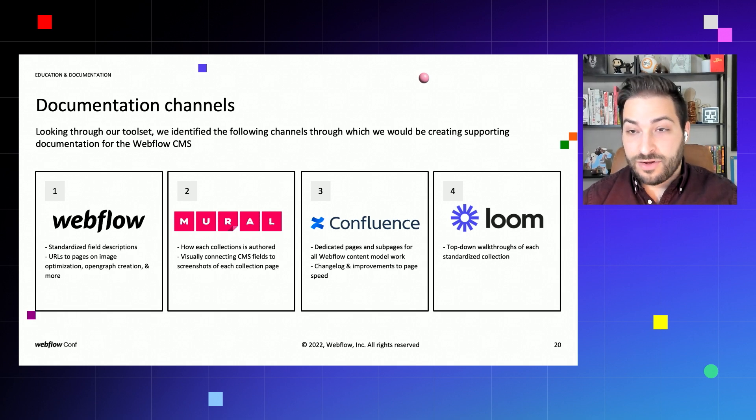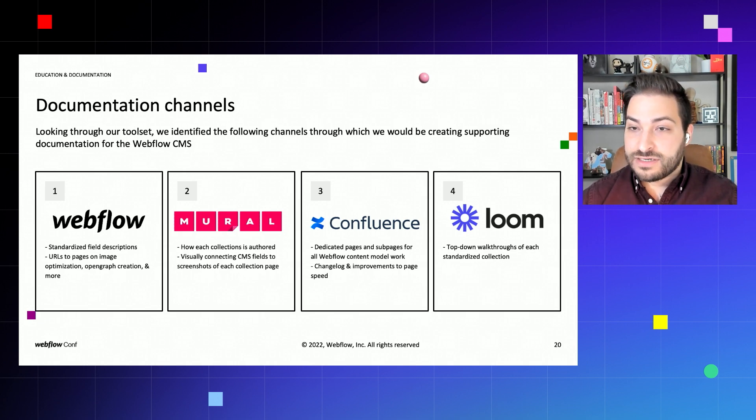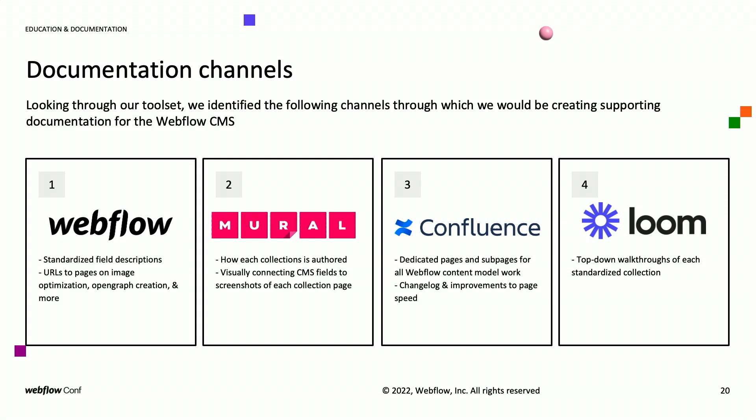Other documentation channels we used were Confluence. We created dedicated guides for image optimization, open graph image collection creation, and writing of all text. We also created individual reports for each CMS collection, detailing what was done to that collection as part of the content model work, links to other documentation about the collection like how to create an item, and before-and-after speed tests showcasing how much the pages improved. Lastly, we leveraged Loom to record walkthroughs of all the work for each collection, as well as a brief overview on how to create new CMS items for every collection.